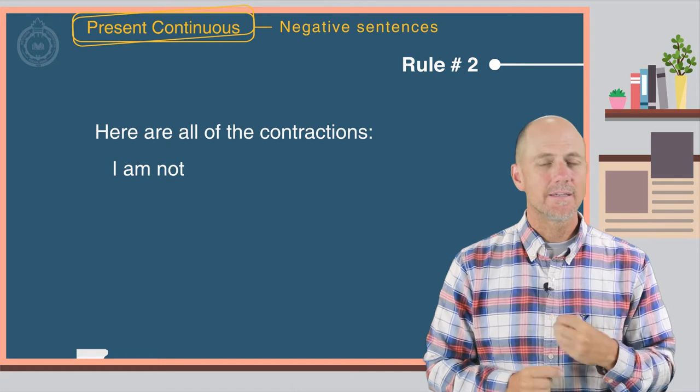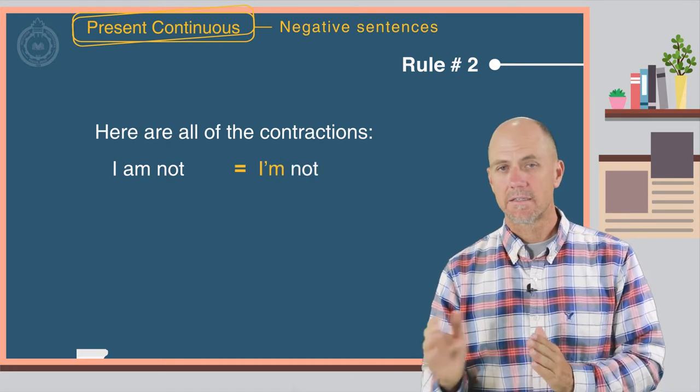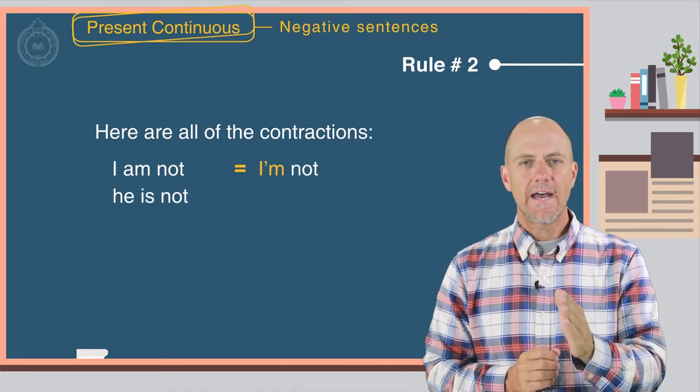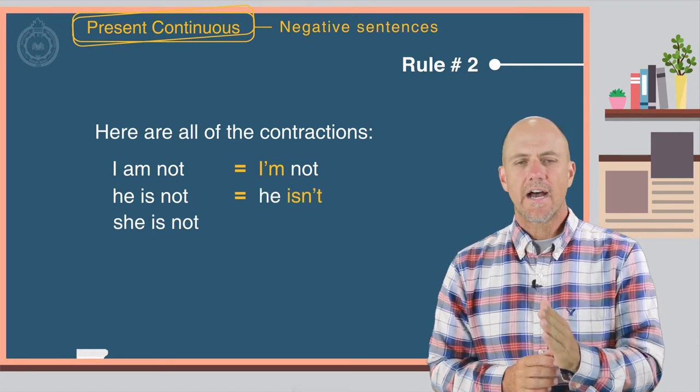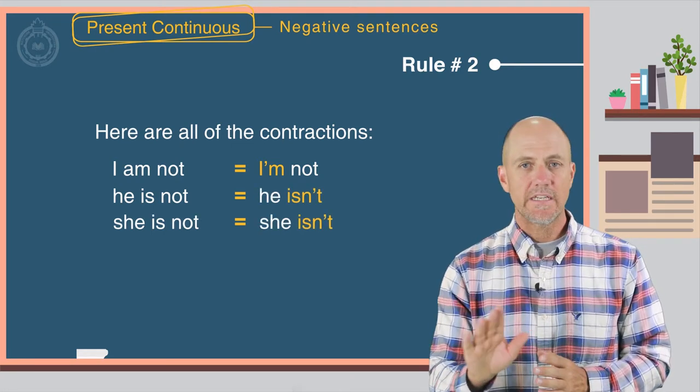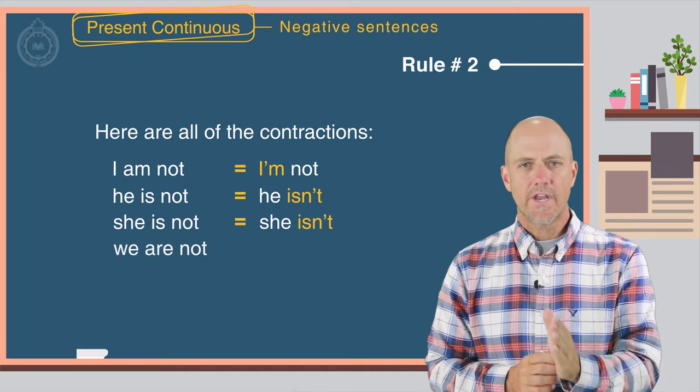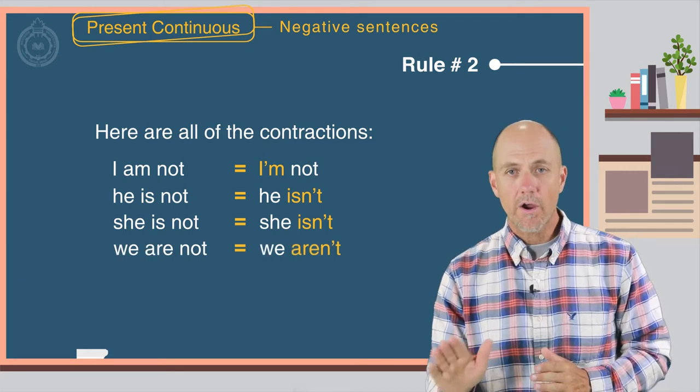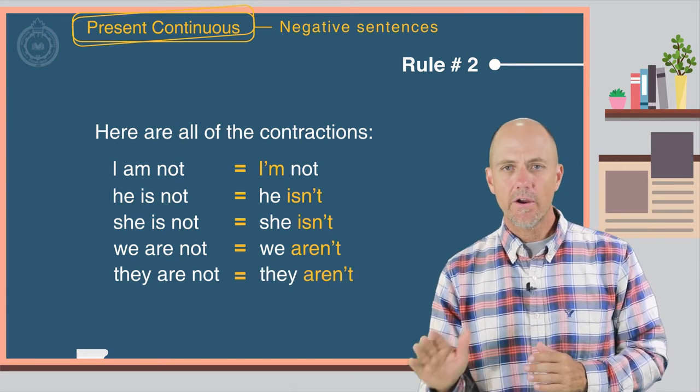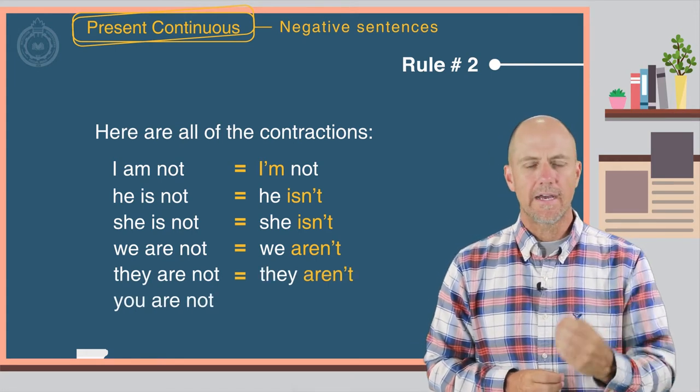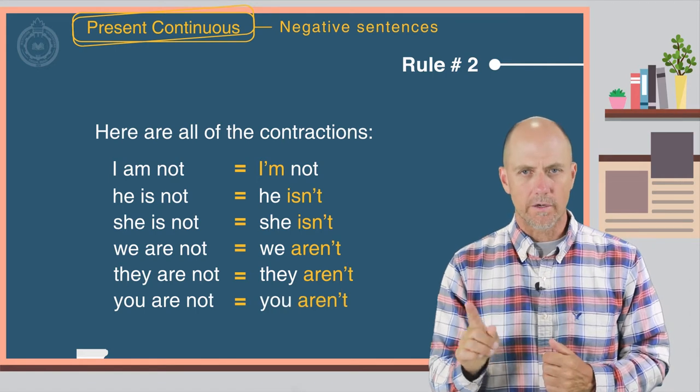Here are all of the contractions. I am not equals I'm not. He is not equals he isn't. She is not equals she isn't. We are not equals we aren't. They are not equals they aren't. They are not equals you aren't.